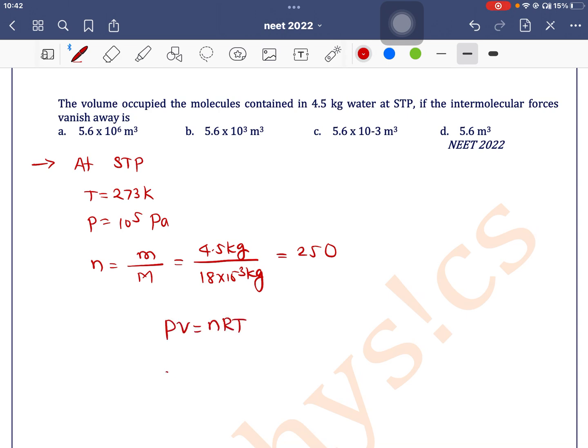So here V is equal to NRT divided by P, where N is 250. R is 8.3. T temperature is 273 divided by 10 to the power 5. If you solve this, you will get 5.66 meter cube. Option D is the correct one.